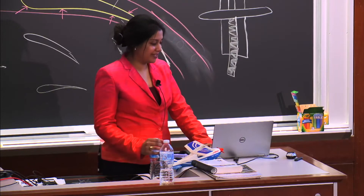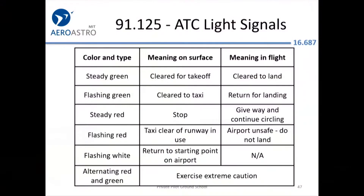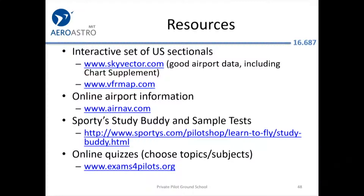There are some light signals. If your radio dies and you need to communicate with the tower, they have a light gun and can communicate information to you via light signals. They're great candidates for FAA questions but unlikely to be used in reality. People don't usually commit this to memory — it's so rare that most checklists just have a page in the back with the signals listed.